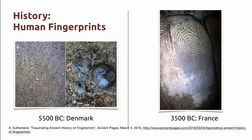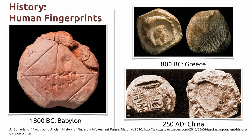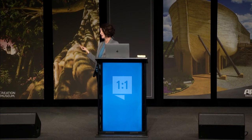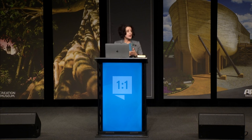Fingerprints actually have a very long history. Going back to an estimated 5500 BC in Denmark, we can see friction ridge skin on pottery, and around 3500 BC in France, we find it on monolithic stones — showing that individuals living at that time recognized there were patterns on their fingers, as we start to see it showing up in carvings. Moving forward, in 1800 BC in Babylon and all the way up to 250 AD in China, they're starting to recognize significance behind fingerprints — primarily thumbprints — putting those on seals and clay tablets as some form of identity.